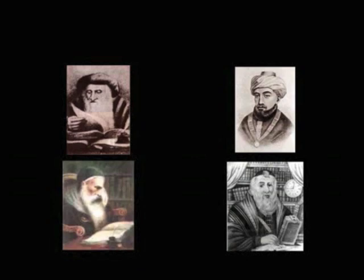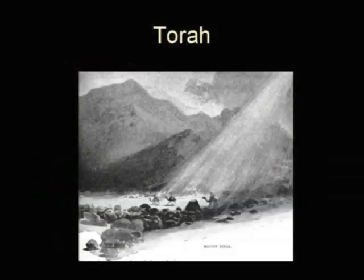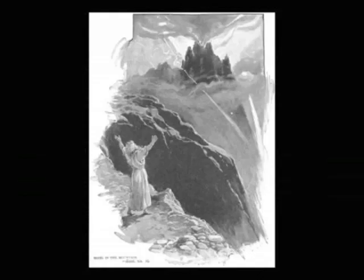There have been many rabbis who have written commentaries on the Torah. Any complete study of the Torah needs to include some commentary from these sages. The Torah, the five books of Moses, is made up of five books that were given to Moses directly from God shortly after the Exodus from Egypt, around 1230 BCE.